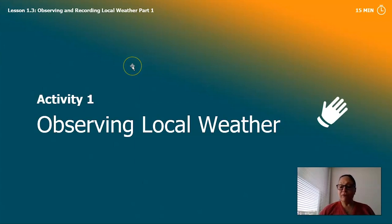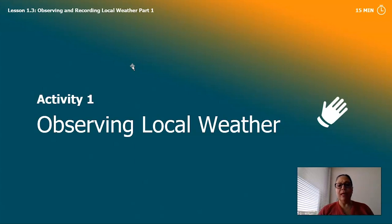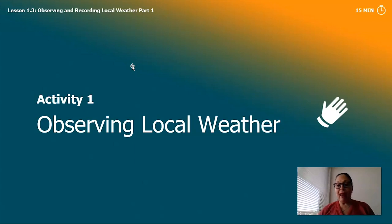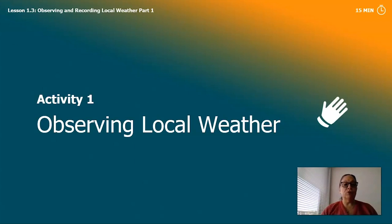On our first activity, we're going to be observing local weather. But before we do that, I want to make sure that you know what the word local means. When we're looking at local weather, it is the weather around us, where we live. So depending on where you live, that's the weather you're going to have. You're going to be observing the local weather around you.